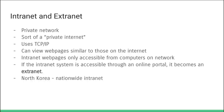An intranet system can become an extranet if it can be accessed through an online portal. For example, you might normally only access an intranet while connected to your office network, but if there's a login page on your company website that lets you access intranet pages, it becomes an extranet. In conclusion, an intranet is a private internet closed off from the World Wide Web, hosting pages only on servers within a specific private network.